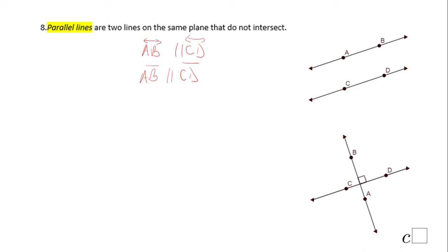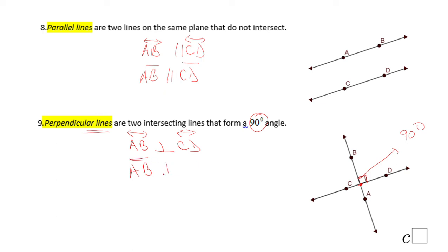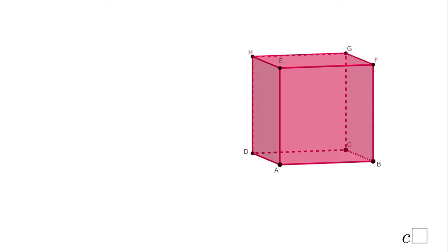Let's go to another type of lines which we call perpendicular lines. Perpendicular lines do intersect at one point, and they intersect in a very special way — you see the box I put there. That angle is 90 degrees. Very important: when two lines are perpendicular, they form four 90-degree angles. The notation is: line AB perpendicular to line CD. You can also write this as segment AB perpendicular to segment CD.